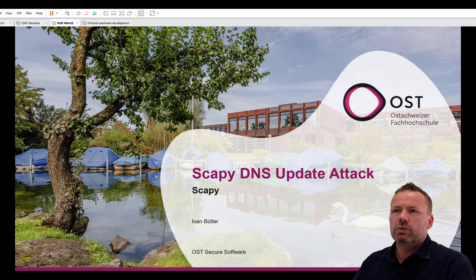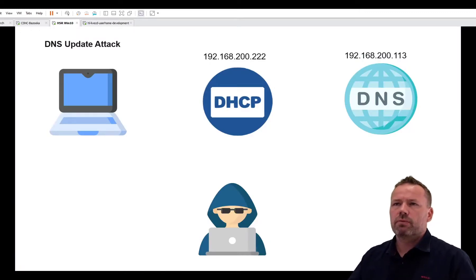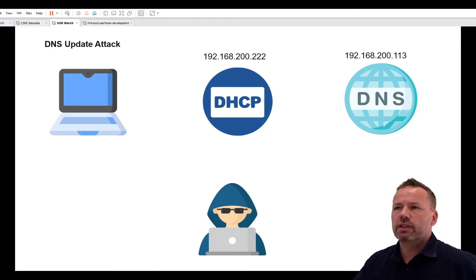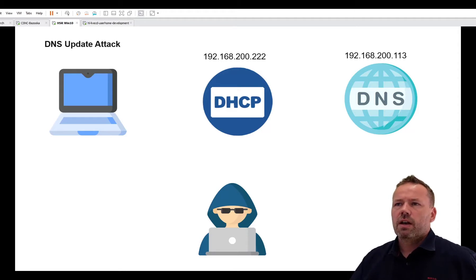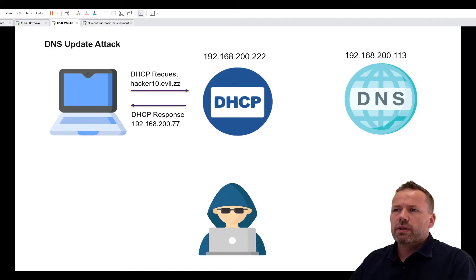In this exercise I want to explain the DNS update attack. Let's assume we have a network with a client, a DHCP server, and a DNS server. The DHCP server is listening on the 200.222 IP address. When the client connects to the network, it sends a DHCP request and also announces its local hostname — in this case, Hacker10.